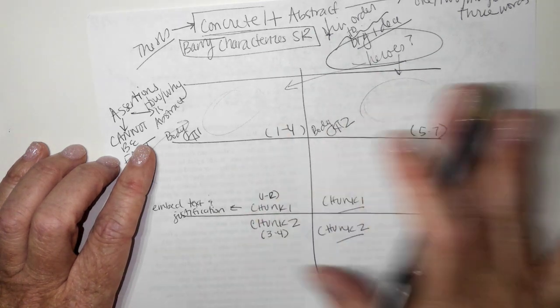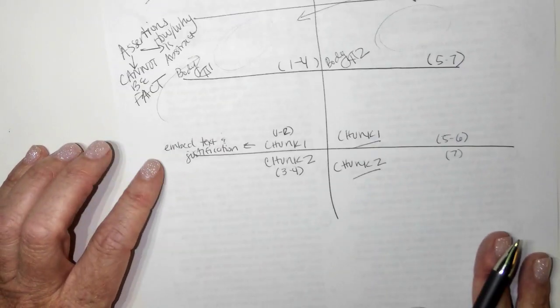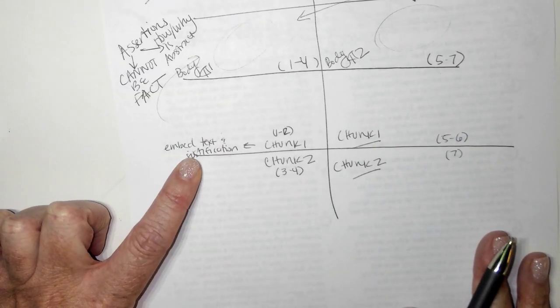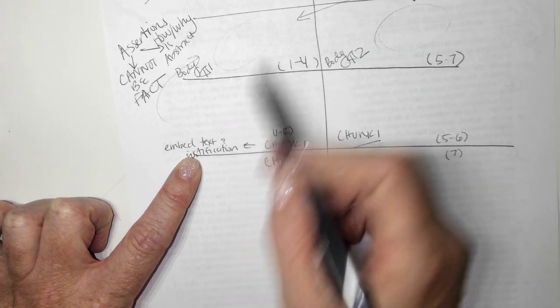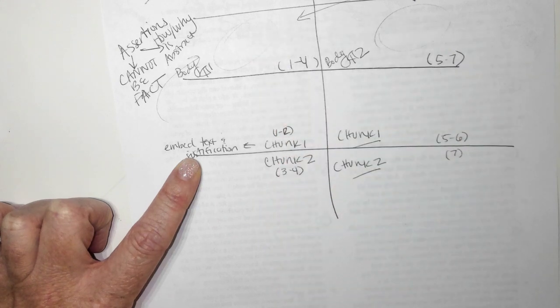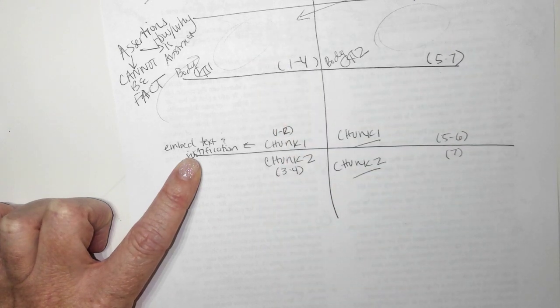So that's a quick layout of what we're looking for. Remember, your justification is not summary. It's not telling me what the quote means. It's telling me how these words prove this idea. Not what they mean, but how does the language do it. All right. That's all I got.